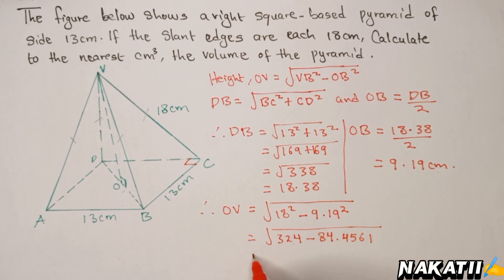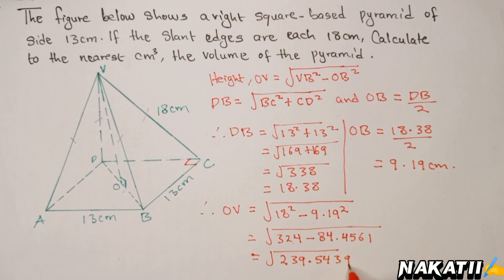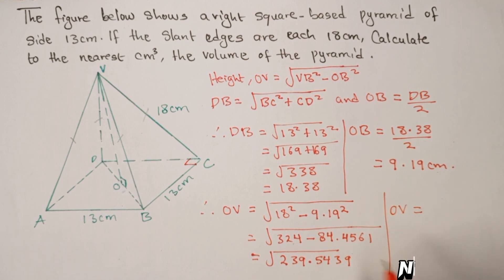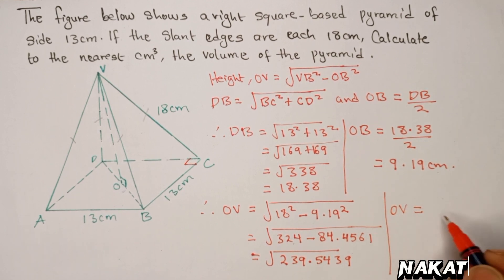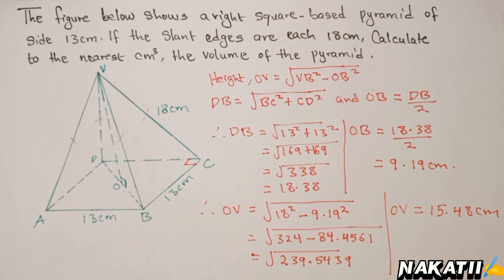When you subtract, you get the square root of 239.5439. Taking the square root of that, OV equals 15.48 centimeters. Now we have OV and can calculate the volume.